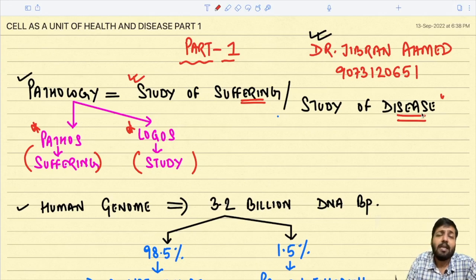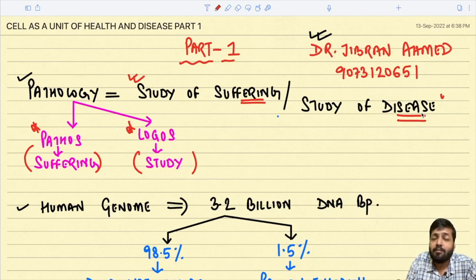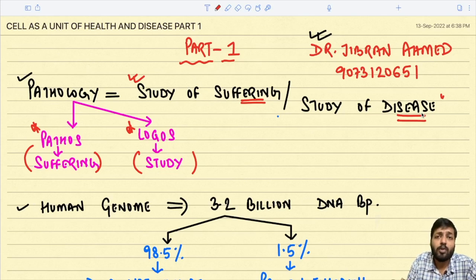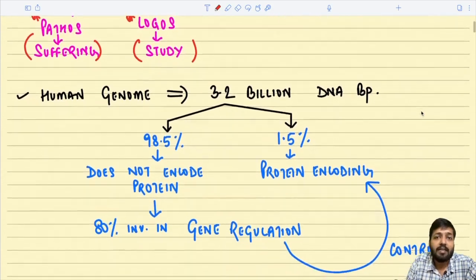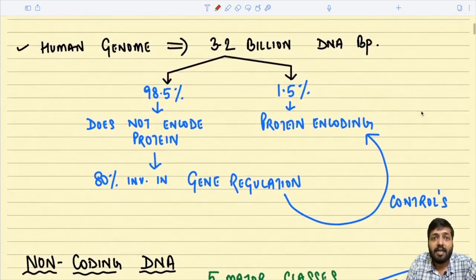Before we understand anything about pathology, we need to understand one very important aspect — we need to understand the cell at a molecular level. Most of the pathogenesis is now based at the molecular level, so before we understand pathology in detail we have to understand the cell completely.